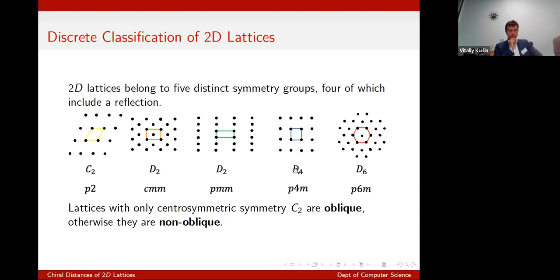We mainly talk about these as groups: D2, D4 — these are dihedral groups, the symmetry groups of a square, a hexagon, and a rectangle, although there are two kinds — centered or non-centered. Lattices with only centrosymmetry by inversion we call oblique. These things are stuck in the plane; don't think of them as being embedded in 3D.